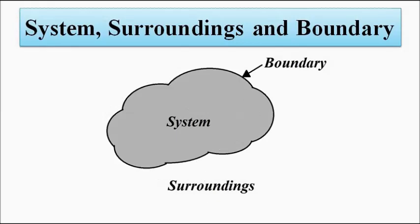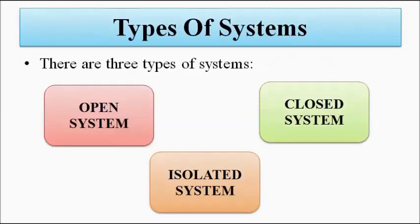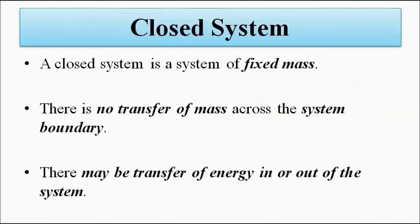The interface or layer between the system and the surroundings is the boundary. When we study a thermodynamic system, there are three types of systems: open system, closed system, and isolated system.